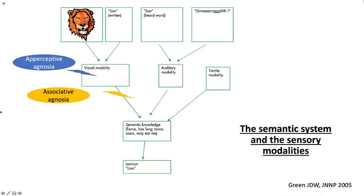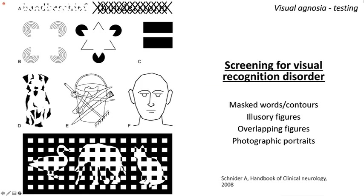Diagrammatically: the semantic system integrates information from all modalities. From the visual modality, after the percept is formed, information goes to the semantic hubs. If there is a disconnection, the percept exists but cannot be associated with meaning — this gives associative agnosia. If the contour itself is not appreciated, we get apperceptive agnosia. Screening for visual recognition disorders is done by showing objects in the visual modality and cross-checking in other modalities, and by objective methods like masked words, illusory figures, overlapping figures, or photographic portraits.